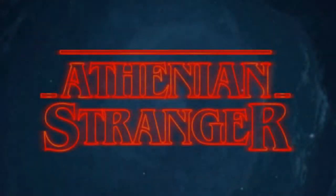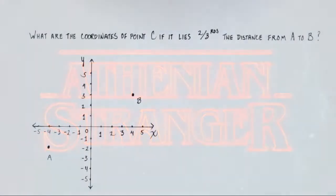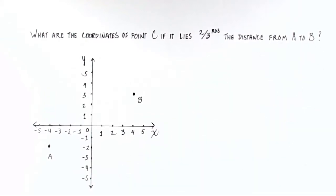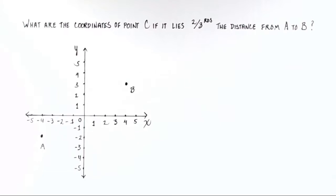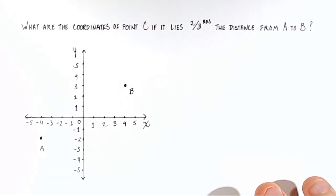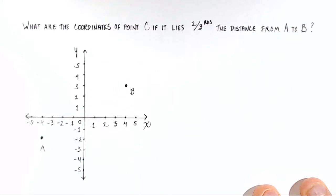All right, ladies and gentlemen, welcome back to this Athenian Stranger tutorial series, where today we're going to look at a geometry problem that involves the distance between two points on a coordinate plane. So deceptively simple, but actually not all that difficult, and we're going to find out just how easy it is. Let's read the problem and see what the picture is telling us.